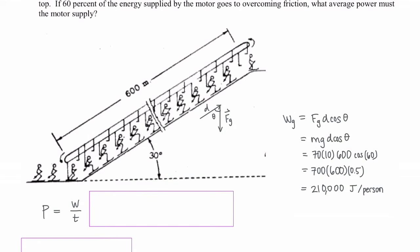Plugging in these values, cosine of 60 is 1 half. So the work overcoming gravity per person is 210,000 joules.